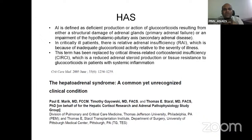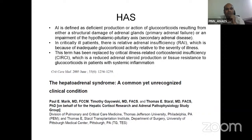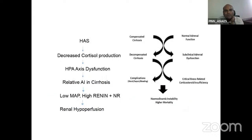Coming to hepatoadrenal syndrome — it is defined as deficient production of glucocorticoids either due to structural damage to adrenal glands or impairment of the hypothalamic-pituitary axis. Relative adrenal insufficiency is due to inadequate glucocorticoid activity in severe illness, termed critical illness-related corticosteroid insufficiency. Because of hepatoadrenal syndrome, there is decreased cortisol production leading to dysfunction of the hypothalamic-pituitary axis, causing relative adrenal insufficiency in patients with cirrhosis, leading to low MAP, causing renal hypoperfusion. Treatment is to supplement corticosteroids.